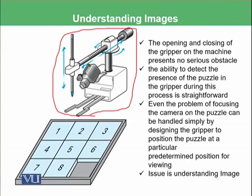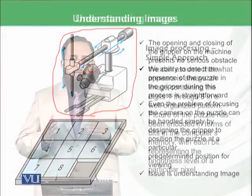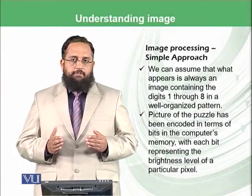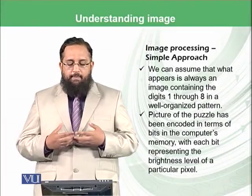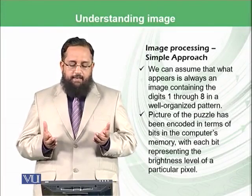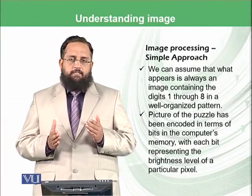So what is the problem? The problem is that whatever image the camera has taken, how can it be understood? If we are able to understand the image — what is the position of the digits at the moment and which digit should be moved upward or downward — that is the main thing. One of the simplest approaches could be that we assume the image always contains digits 1 through 8 in a well-organized manner.